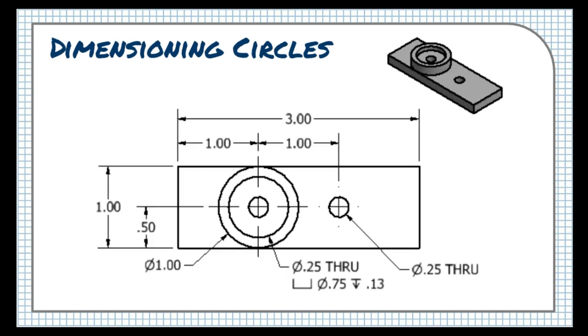When dimensioning complete circles, the diameter of the circle is given with the diameter symbol in front. Like with arcs, a leader line is used to point directly at the edge of the circle this dimension is referring to, with the arrowhead pointed toward the center.